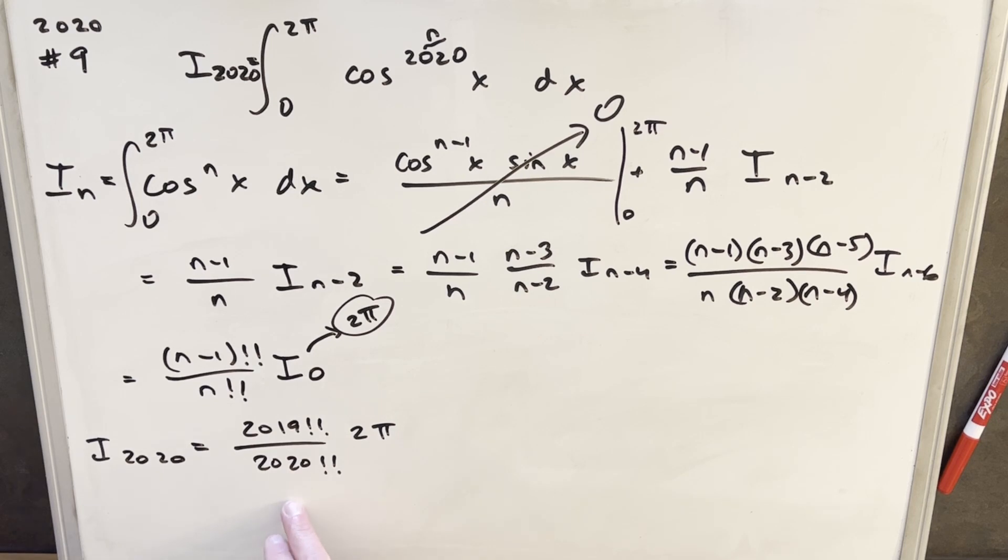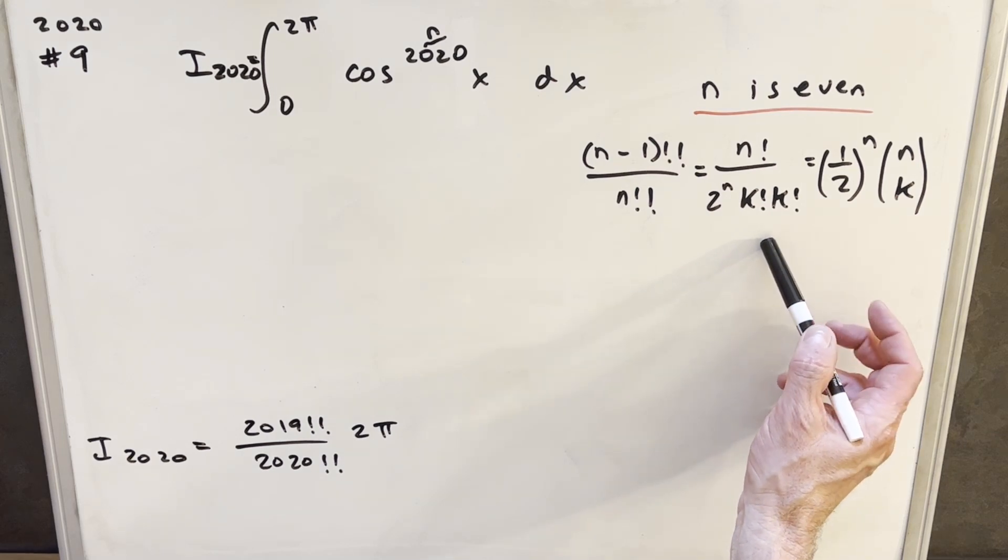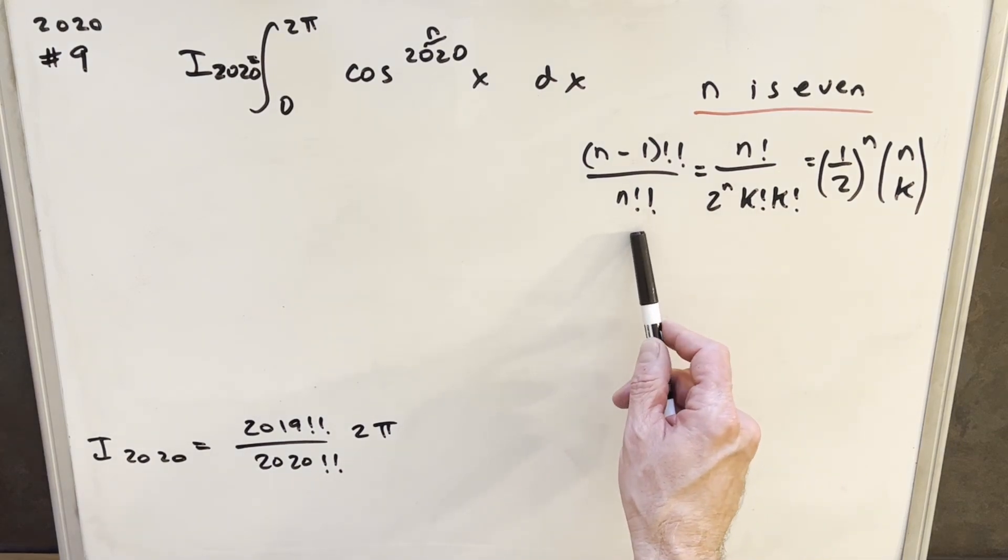Now from here, we don't really want to try to calculate this whole thing, so we could leave it. But maybe you're not comfortable with double factorials, and you don't want to leave it this way. So let's see if we can get something a little nicer to express this.